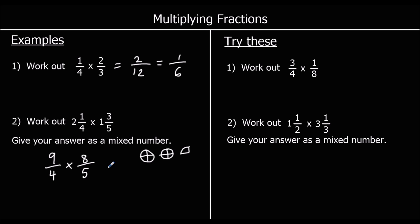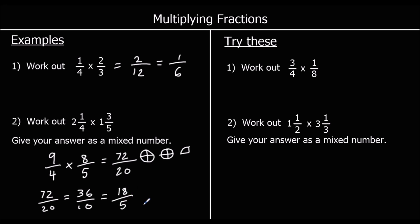Now we can just times top and bottom. Nine times eight is seventy-two, and four times five is twenty, so we've got seventy-two over twenty. They're both in the two-times table, so we halve top and bottom: seventy-two over twenty is thirty-six over ten, and halving again gives eighteen-fifths. We need to give this as a mixed number: three fives are fifteen, so three whole ones, with three remaining — so three and three-fifths.